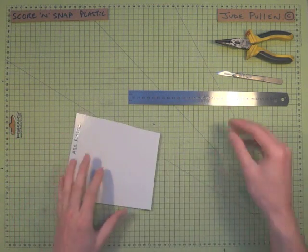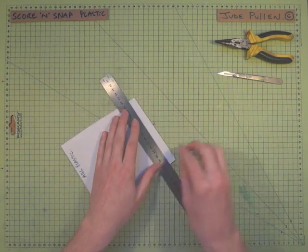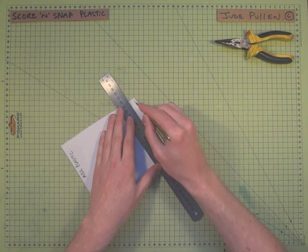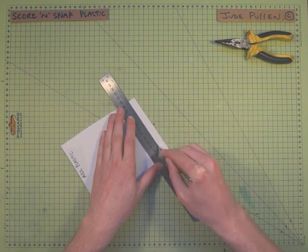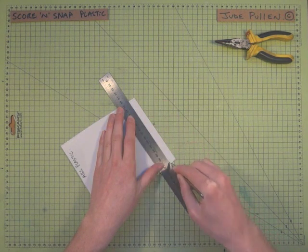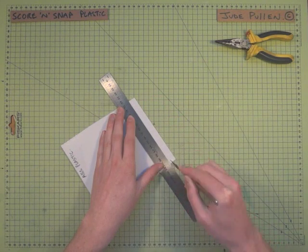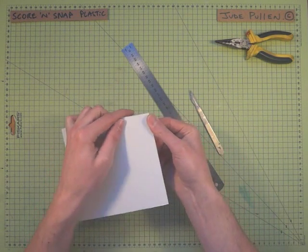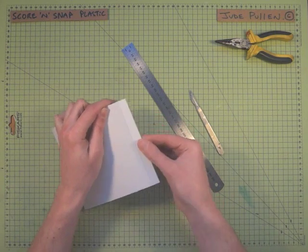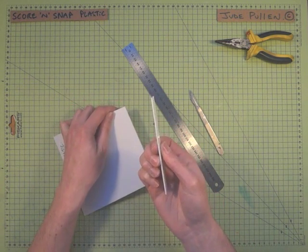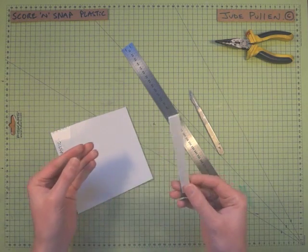So if we take our ruler and scalpel with a good fresh blade and we cut maybe about three times or more, we'll find that we've made a little cut in there. And we can just bend it, give it a little wiggle, and it'll come away just like that.